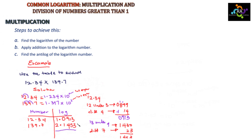Since this is multiplication, we add the two logarithm values: 1.0913 + 2.1453. Adding gives 3 + 2 = 3 for integers, and 0913 + 1453 = 2366 for the mantissa. The combined logarithm result is 3.2366.